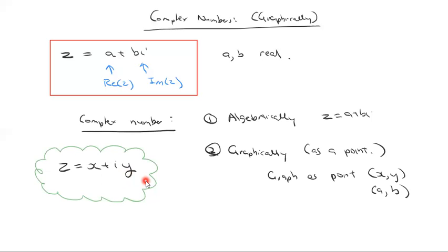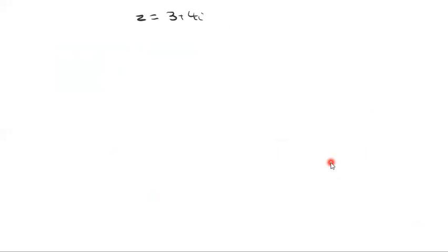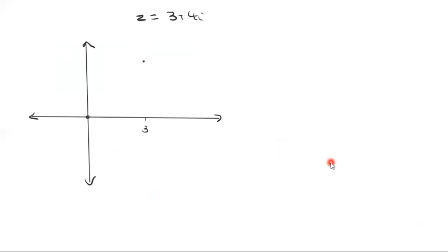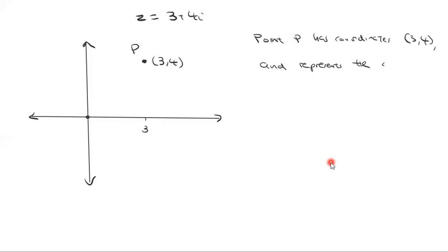So that is one other way we can represent a complex number. The first way is the algebraic way. The second way is to take the real part and imaginary part separately, think of them as x and y coordinates, and graph it out. For example, if z equals 3 plus 4i, we graph coordinate axes, go 3 across and 4 up. So we say this is the point (3, 4). Point P has coordinates (3, 4) and represents the complex number z equals 3 plus 4i.